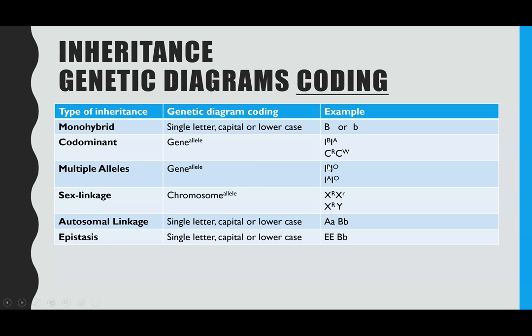For sex linkage, because the gene is found on the X chromosome, we write the allele against the X chromosome. Females (XX) have two alleles — two different versions of that gene — but males only have an allele on the X chromosome because the gene is not found on the Y chromosome. Autosomal linkage and epistasis use the typical monohybrid coding — one letter, capital or lowercase — but both involve dihybrid inheritance, so you'd use letter A for gene A with its two alleles, and letter B for a different gene with its two alleles.